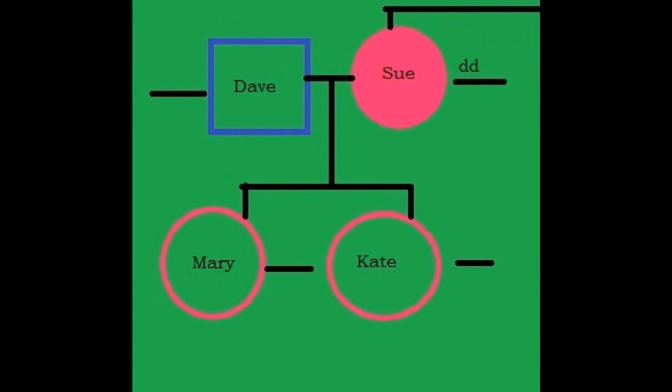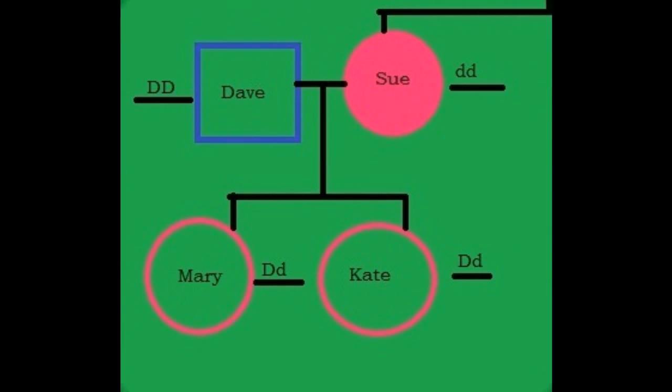Sue has little d little d, but neither of her children have the trait, which means that Dave has to be capital D capital D, leaving her children heterozygous.